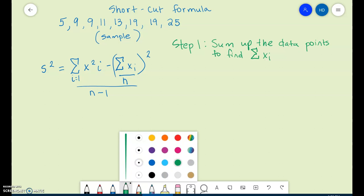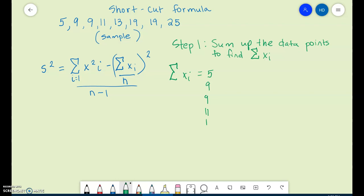So we're going to do the sum of Xi, and we're going to add our numbers up here. So we have 5, 9, 9, 11, 13, 19, 19, and 25.